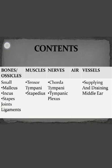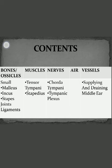The contents of the middle ear include: ear ossicles — small bones which are the malleus, incus, and stapes — along with their joints and ligaments. Muscles include tensor tympani and stapedius. Nerves include the chorda tympani nerve and the tympanic plexus. The cavity is air-filled, and vessels supplying and draining the middle ear are also present inside the cavity.